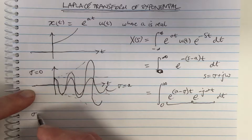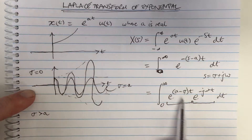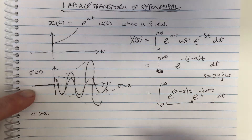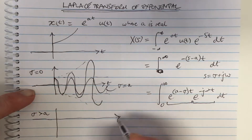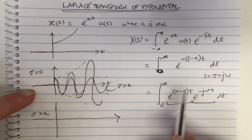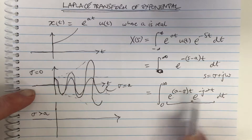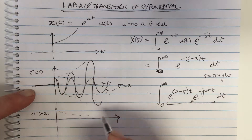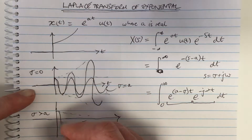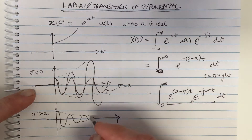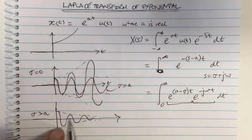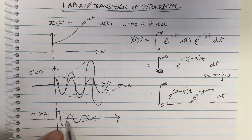What if σ is bigger than a? Then a − σ is negative, so e^((a−σ)t) is a decaying exponential. This means the overall function is a cosine waveform with a decreasing amplitude — and now this waveform has an integral that we can evaluate.